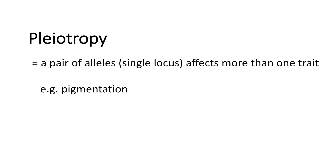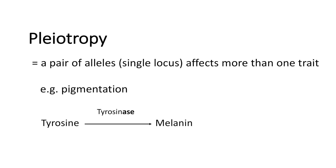What is pleiotropy? Pleiotropy is when a pair of alleles on a single locus affects more than one trait. As an example we have pigmentation. In the usual case we have the enzyme tyrosinase, which modifies tyrosine to melanin. Melanin is a specific and important product for pigmentation.